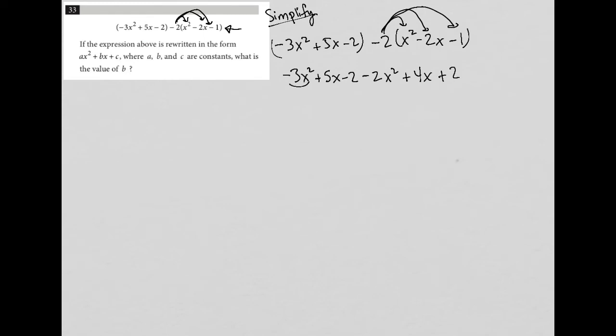To combine like terms, I have negative 3x squared minus 2x squared, so that becomes negative 5x squared. So those are gone and done with. Then I have 5x plus 4x, so that becomes 9x. And I have negative 2 plus 2, which is just 0.